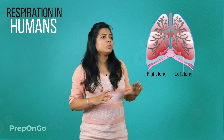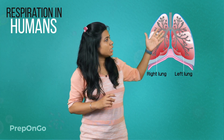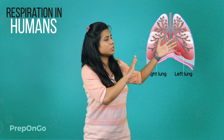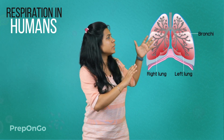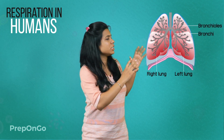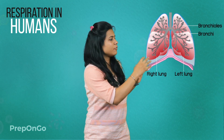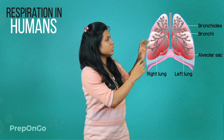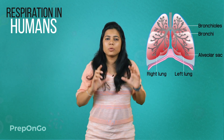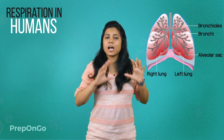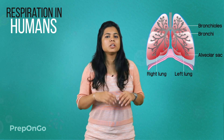The trachea divides into the lungs via the bronchi. These bronchi further divide into bronchioles, which are connected to the alveolar sacs. The alveolar sacs contain alveoli, which are richly supplied with blood.